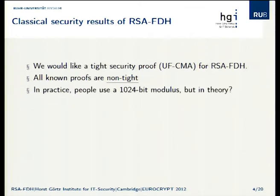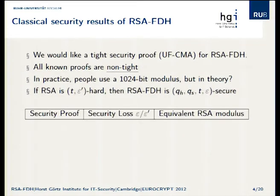As we heard, in practice people use 1,024-bit moduli. What does this mean in theory? What can we theoretically guarantee? Getting a bit more formal: if we assume that it's (T, ε') hard to invert RSA, then RSA full domain hash is (Q_H, Q_S, T, ε)-secure, where Q_H is the number of hash queries and Q_S is the number of signature queries.